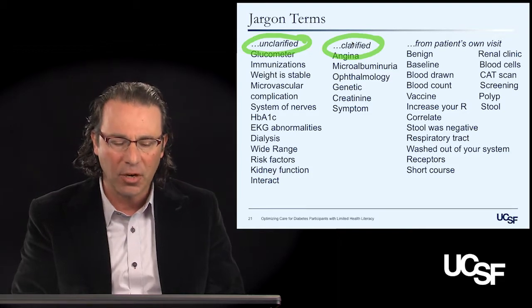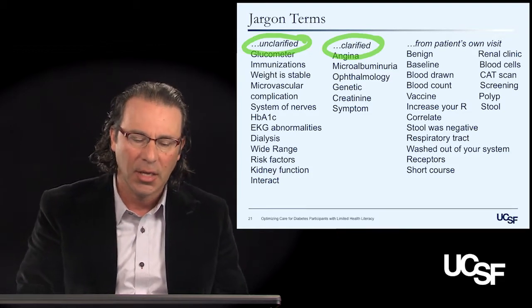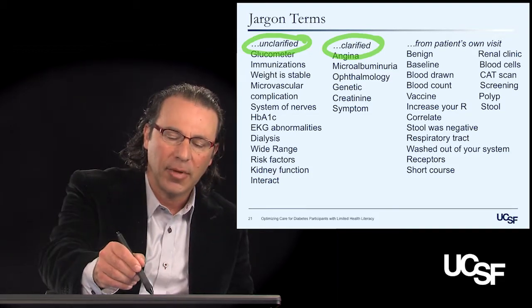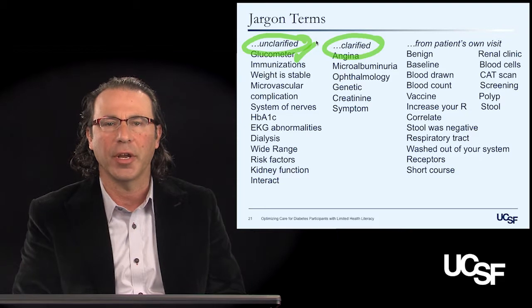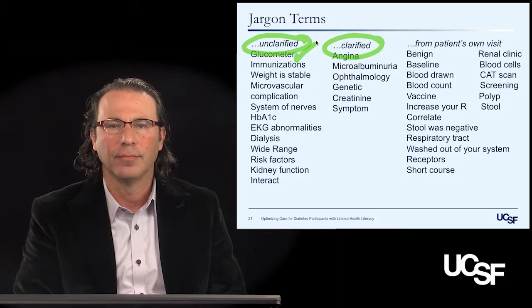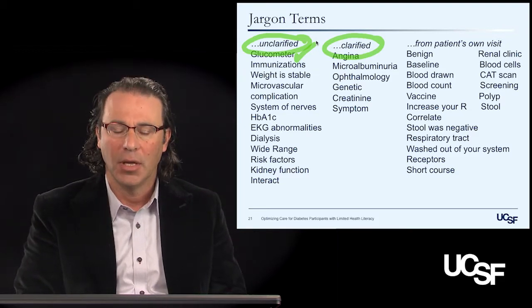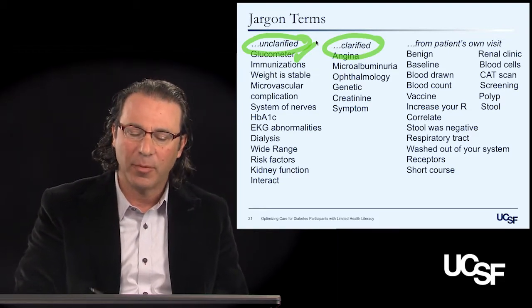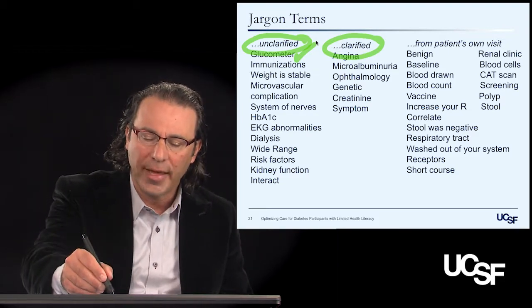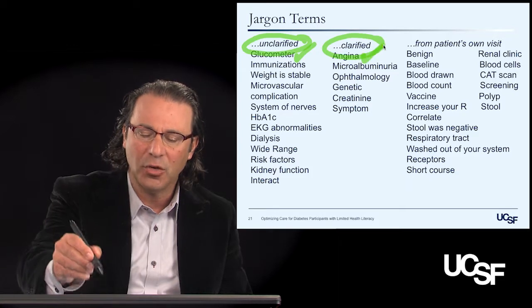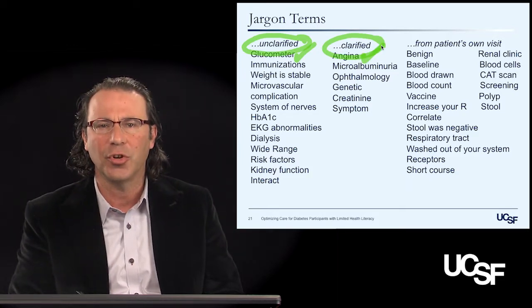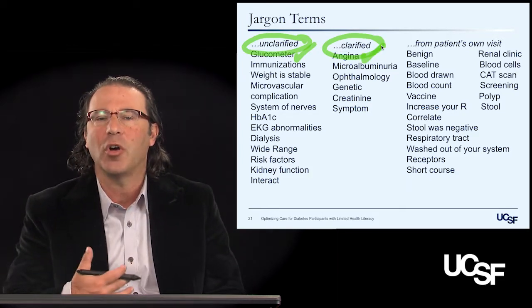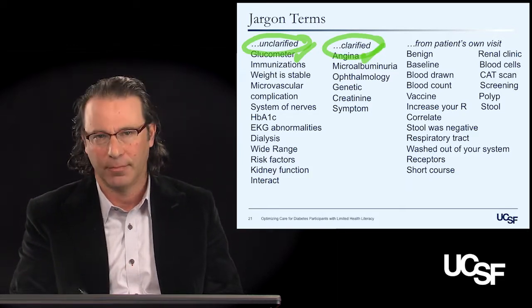An example of unclarified jargon might be: 'It looks like your glucometer isn't working.' An example of clarified jargon might be: 'That chest pain you have when you're walking up the stairs, Ms. Jones — that's what we call angina.'